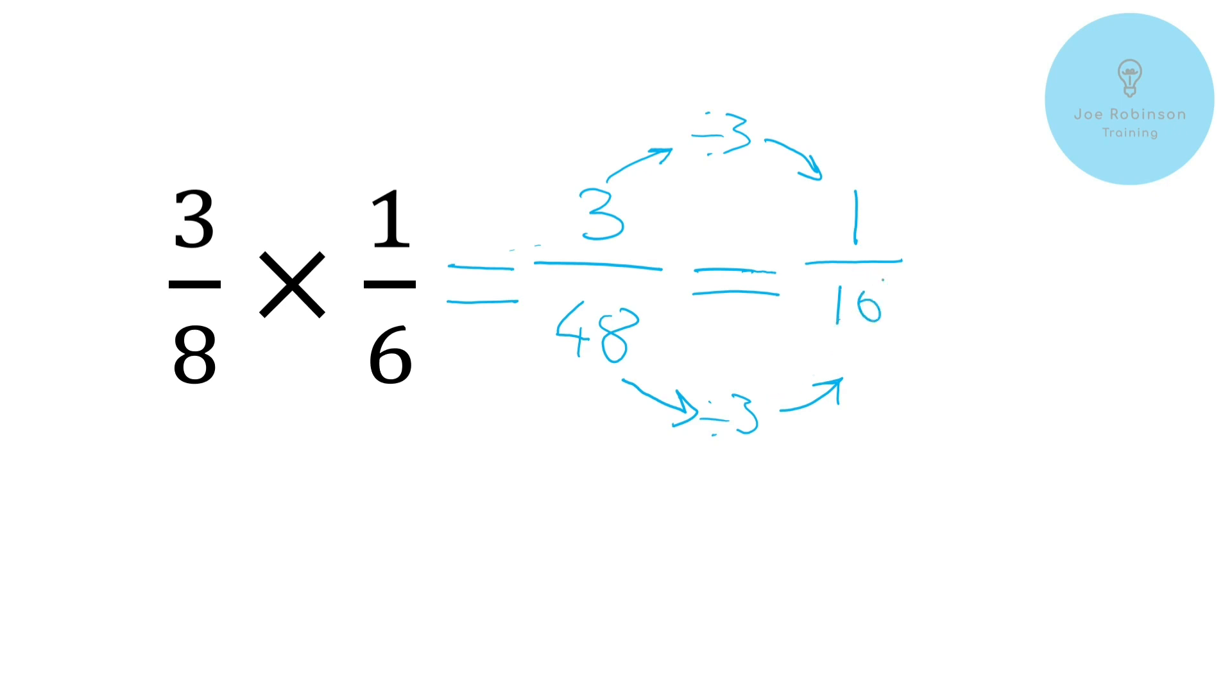So what we've actually got there is a sixteenth which is kind of that's actually quite a nice fraction of sixteenth because you can imagine a circle getting divided into half into quarters into eighths and then into sixteenths is kind of the next logical kind of step along that road. So there we go. So three eighths times by one sixth gives us a total of one sixteenth.